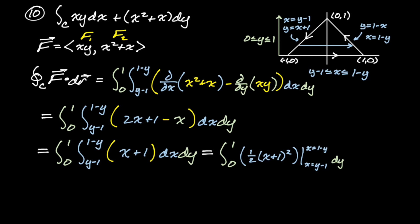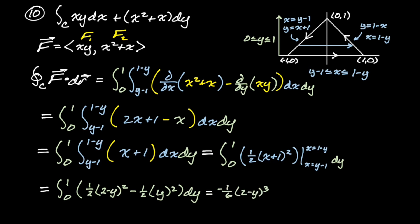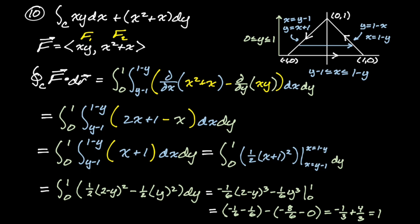Plugging in x = 1 − y gives (1/2)(2 − y)², and plugging in x = y − 1 gives (1/2)(y)². So the inner integral becomes (1/2)[(2 − y)² − y²]. To integrate (2 − y)² with respect to y, remember the chain rule gives a negative, so we get −(1/6)(2 − y)³ − (1/6)y³, evaluated from 0 to 1. Plugging in 1: −1/6 − 1/6 = −1/3. Plugging in 0: −8/6 = −4/3. So we get −(−1/3 − (−4/3)) = −1/3 + 4/3 = 1. The answer is 1. That's the whole problem set — I hope this was helpful, good luck!